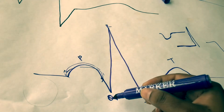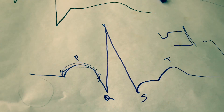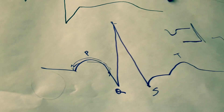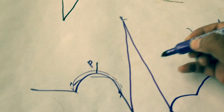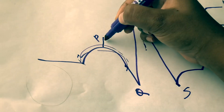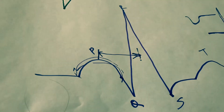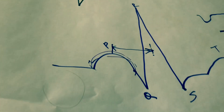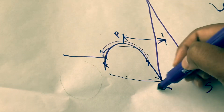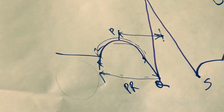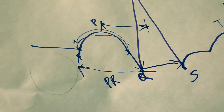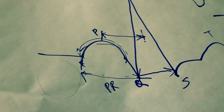The P waves are upright. That is why we need every QRS to be preceded by a P wave. We need to have all the P waves accounted for. Here we will measure the PR interval. The QRS is within the normal range for sinus rhythm.